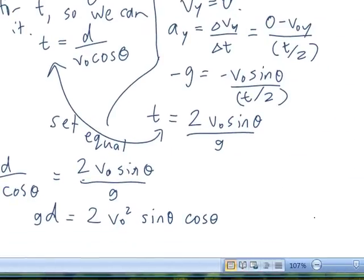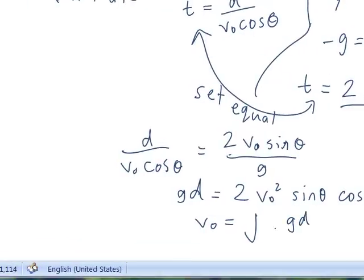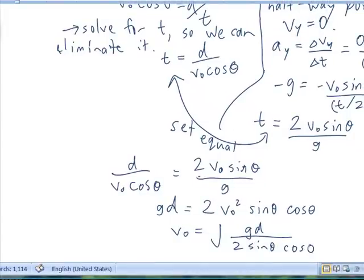And solving out for V sub 0, which is what we're asked to solve for, is equal to the square root of g times d divided by 2 sine of theta cos of theta. So hopefully that's in our list of answers.